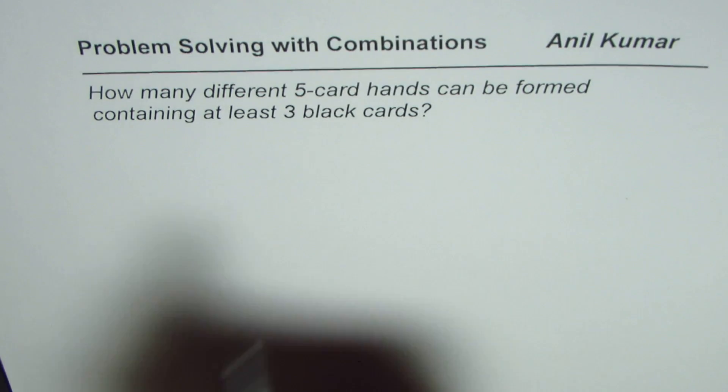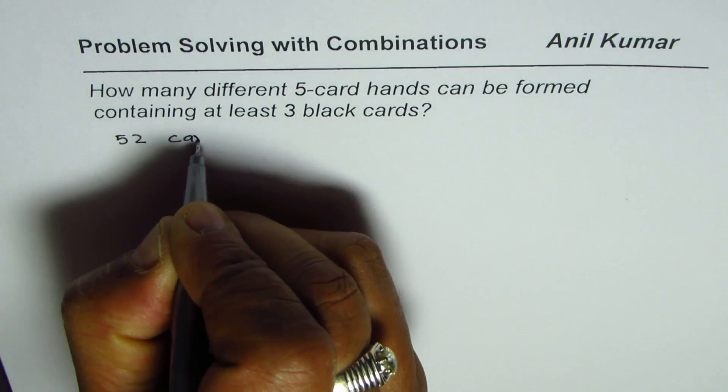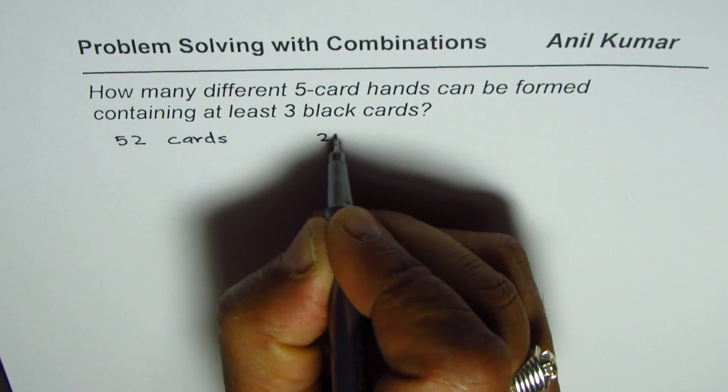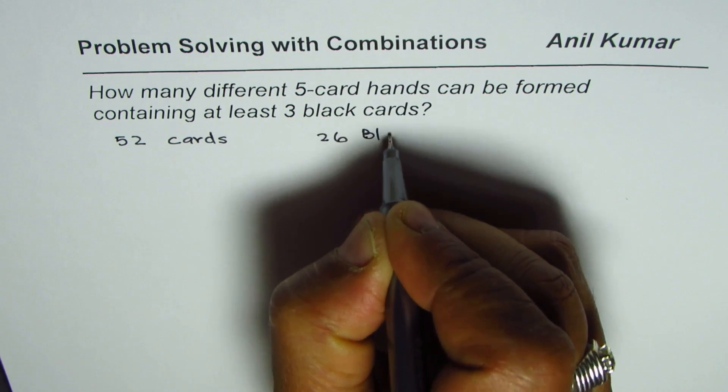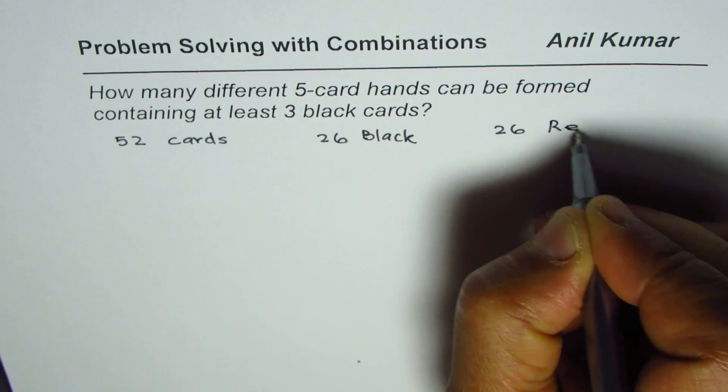Now in a pack of cards, we have 52 cards, right? So we have 52 cards, out of which 26 are black cards and 26 are red cards.